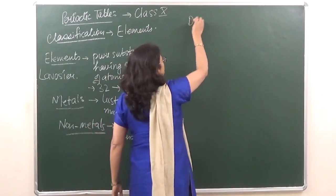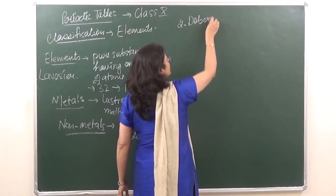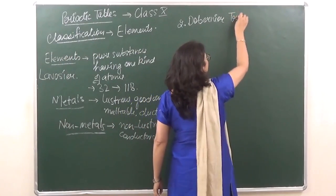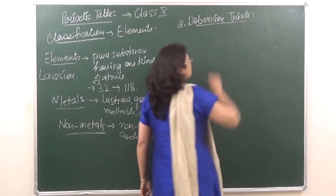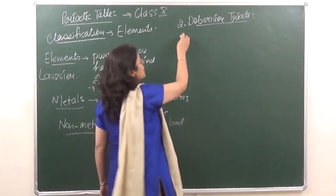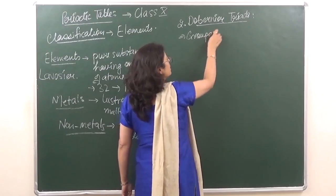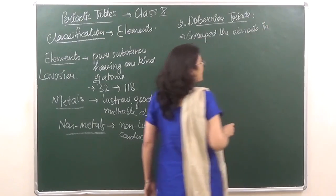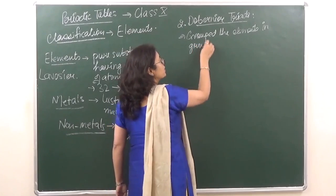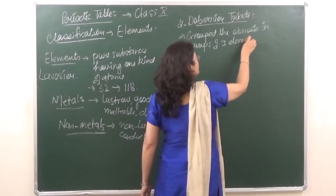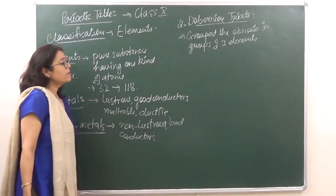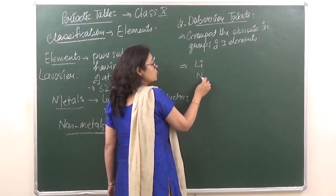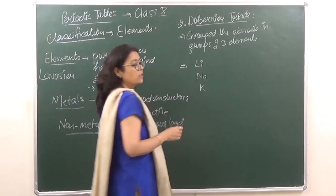The second classification was given by a scientist named Dobereiner, and it is known as Dobereiner's Triads. He grouped the elements into triads — groups of three elements. He arranged the elements such that the atomic mass of the central element was an average of the first and the third.